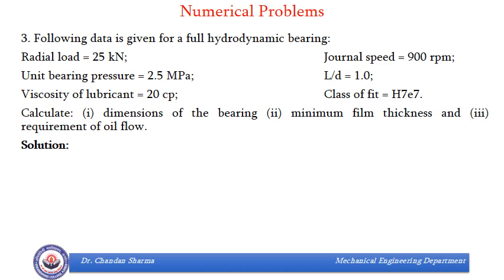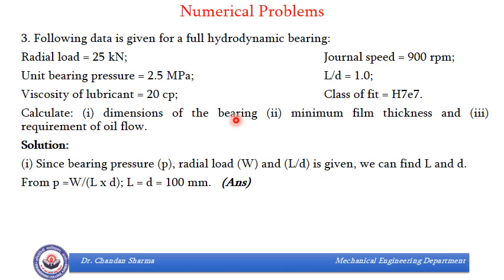Let us come on to question number three. In this question, apart from other things that were already there in the previous question, there is one data which is unique, unlike previous questions. That is class of fit, H7 E7. And we need to find dimensions of bearing, minimum film thickness and requirement of oil flow. Since L by D is given to us, pressure is given to us and load is given to us, we can easily find what would be dimensions of bearing. So for this case, L and D come out to be 100 mm.